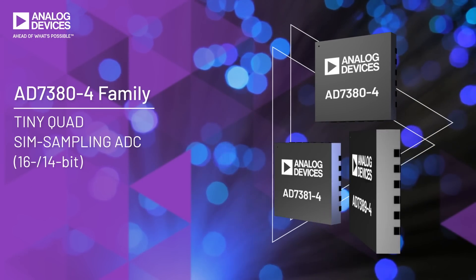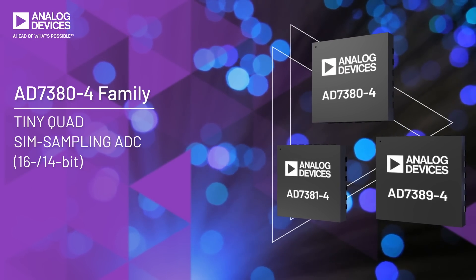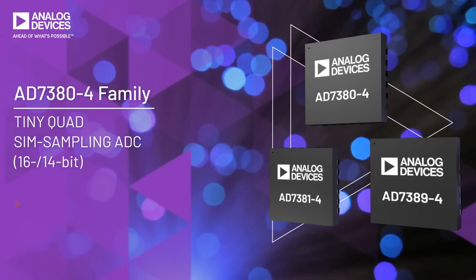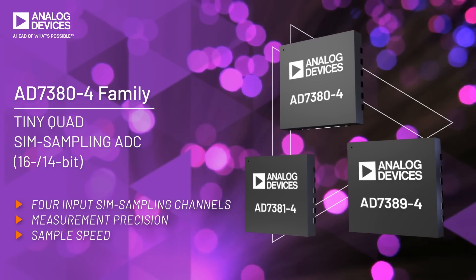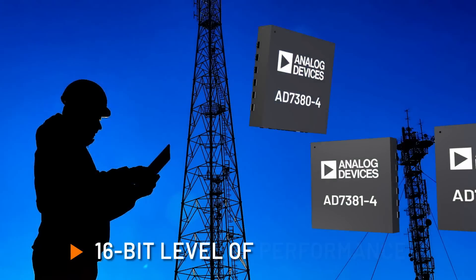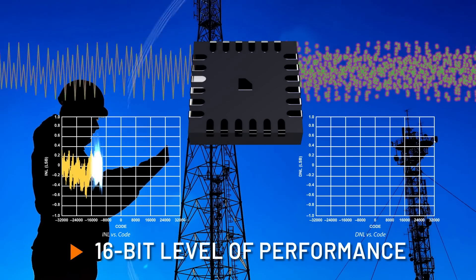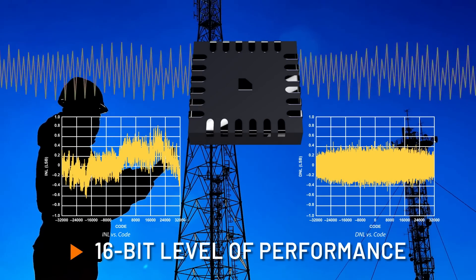The AD7380-4 family of quad ADCs offers a unique combination of 4-input simultaneous sampling channels, measurement precision, and sample speed, all in a tiny package. 16-bit high-precision signal acquisition and conversion enhances system level performance.